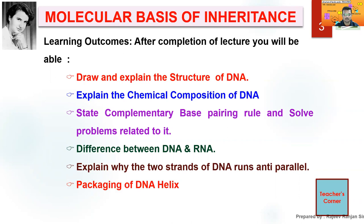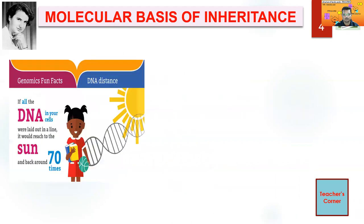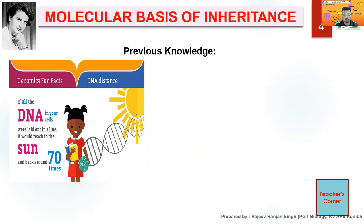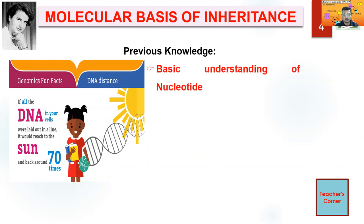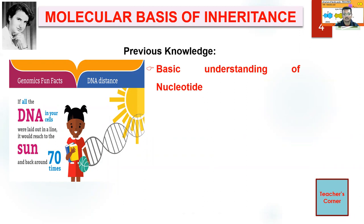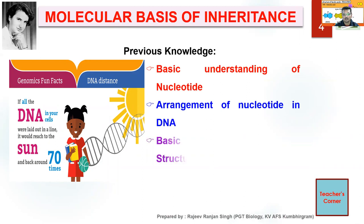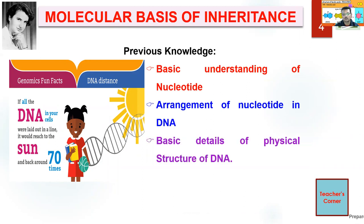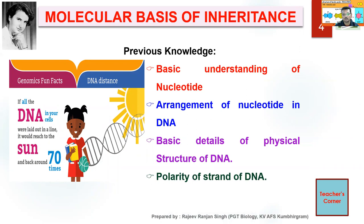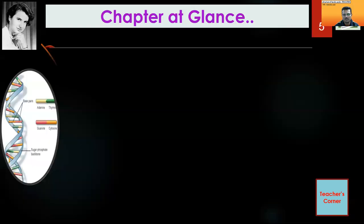We'll also cover the packaging of the DNA helix. In the previous chapter, the basic understanding of nucleotides that you would have read in class 11th will come handy. Arrangement of nucleotides in DNA, basic details of the physical structure of DNA, and polarity of strands — how do we measure the polarity? I'll be repeating these for your better understanding.